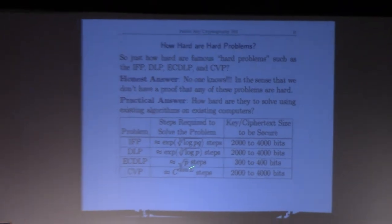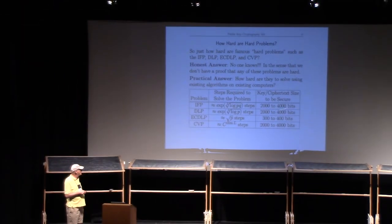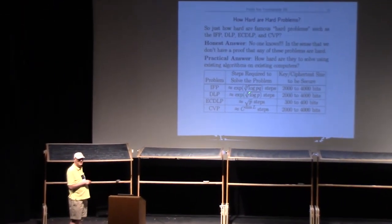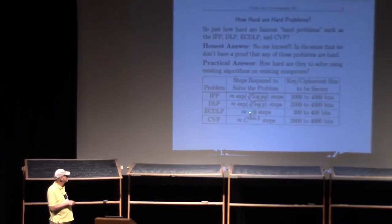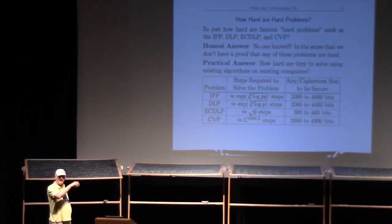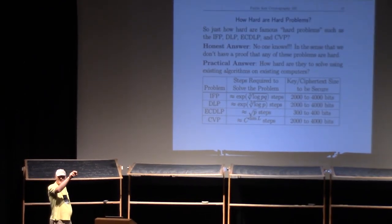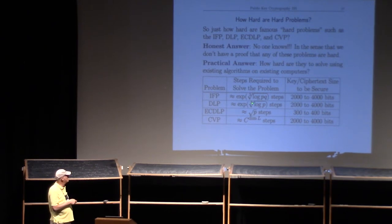The elliptic curve discrete log takes about square root of p steps. This square root of p is e raised to the one-half log p, but here we've got e raised to the cube root of log p, which is smaller. So this is harder—elliptic curve systems have smaller keys, smaller ciphertext. CVP takes roughly a constant to the dimension of the lattice, and they're roughly the same size as the older ones.